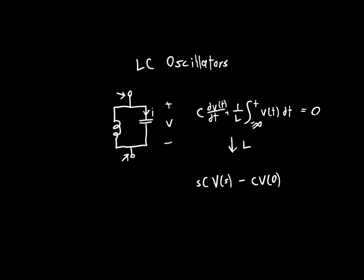We're assuming that the capacitor has some initial voltage across it. We could say there's some initial current and some initial voltage, but in general all we need is one degree of freedom because that's all we have in our circuit. Then plus 1 over sL, since we're going to assume the current at time zero is equal to zero.